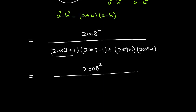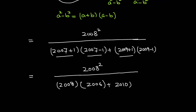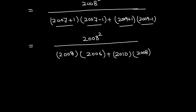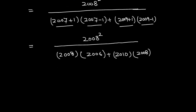So 2007 plus 1 is 2008, and 2007 minus 1 is 2006. Then 2009 plus 1 is 2010, and 2009 minus 1 is 2008. In the next step I am going to take 2008 and 2008 common from the denominator.